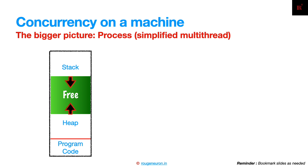These two keep moving towards each other. If they meet, you get things like memory exhaustion, runtime errors, or a stack overflow error, depending on which segment has overwalked its boundary. The point is you cannot use them infinitely.